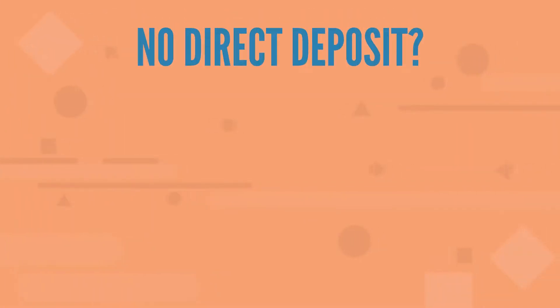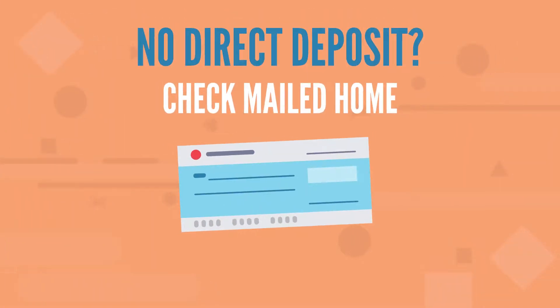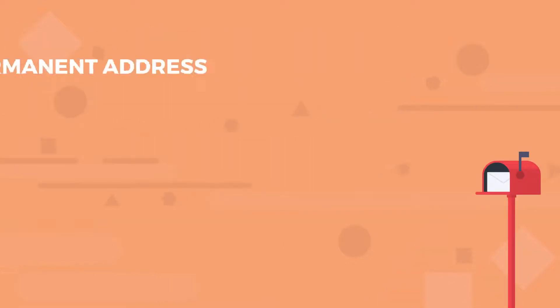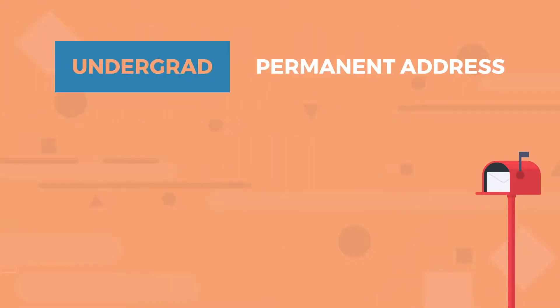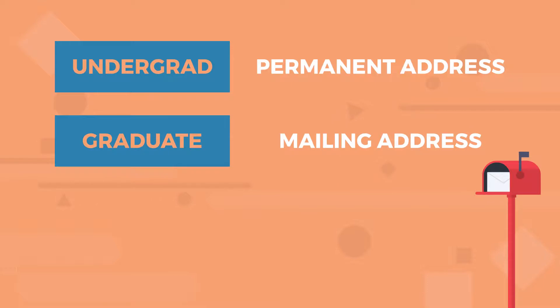If there isn't a direct deposit account for refunds set up in eSuite, a refund will be mailed to your permanent address if you're an undergraduate student, and to your mailing address if you're a graduate student.